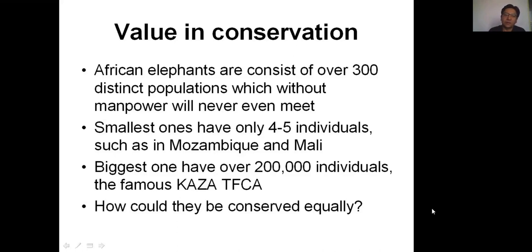What is the conservation value of this split listing? African elephants consist of over 300 distinct populations. Without human intervention, these populations will never meet. The smallest ones have only four to five individuals surviving, such as those in Mozambique and Mali, while the biggest — the Kazaa Trans Frontier Conservation Area — has over 200,000 individuals. They clearly cannot be conserved in an equal manner.